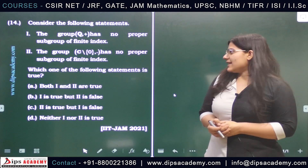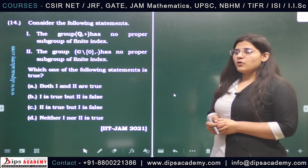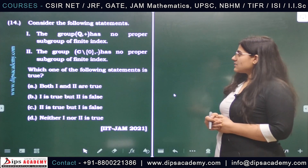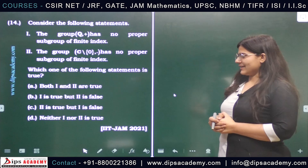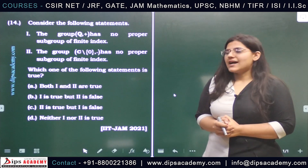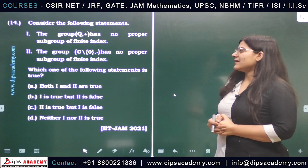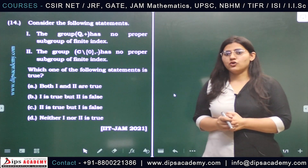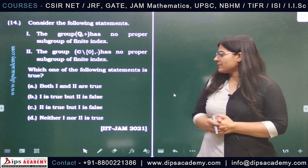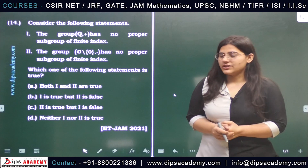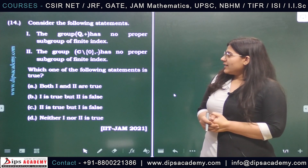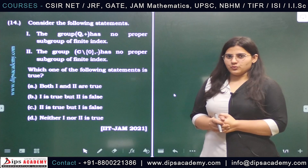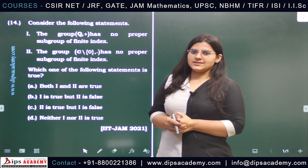Statement one states that the group of rationals under addition, Q+, has no proper subgroup of finite index. Statement two states that the group C* with respect to multiplication has no proper subgroup of finite index. This is a single correct question, and we claim that both of these statements are true, so we are going to prove them.